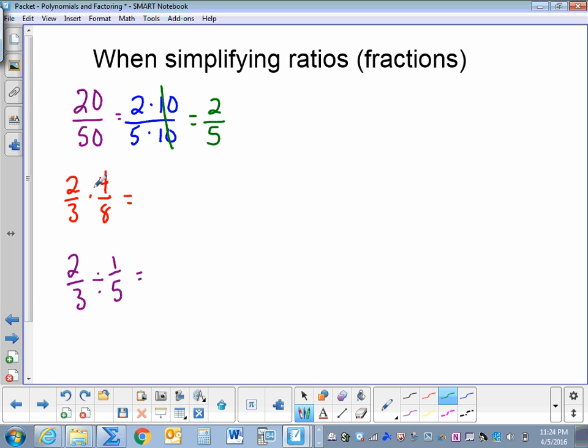Another principle when simplifying ratios: we can take two fractions that are multiplied and just make one big fraction and put them together. Now we can eliminate from top to bottom. So 4 over 8 is 2, and 2 divided by 2 is 1. So that equals 1 third.